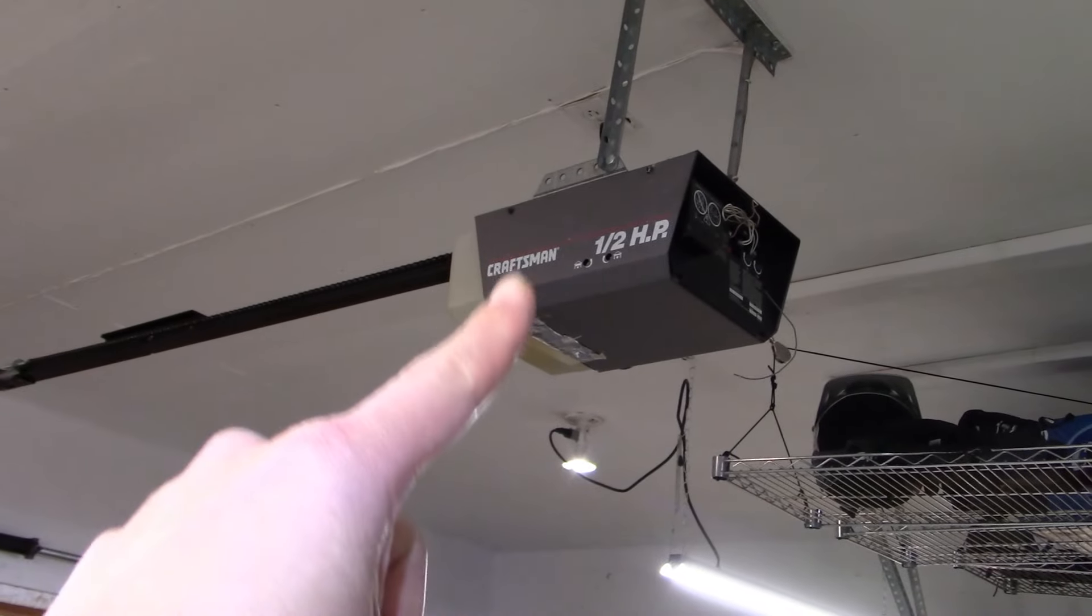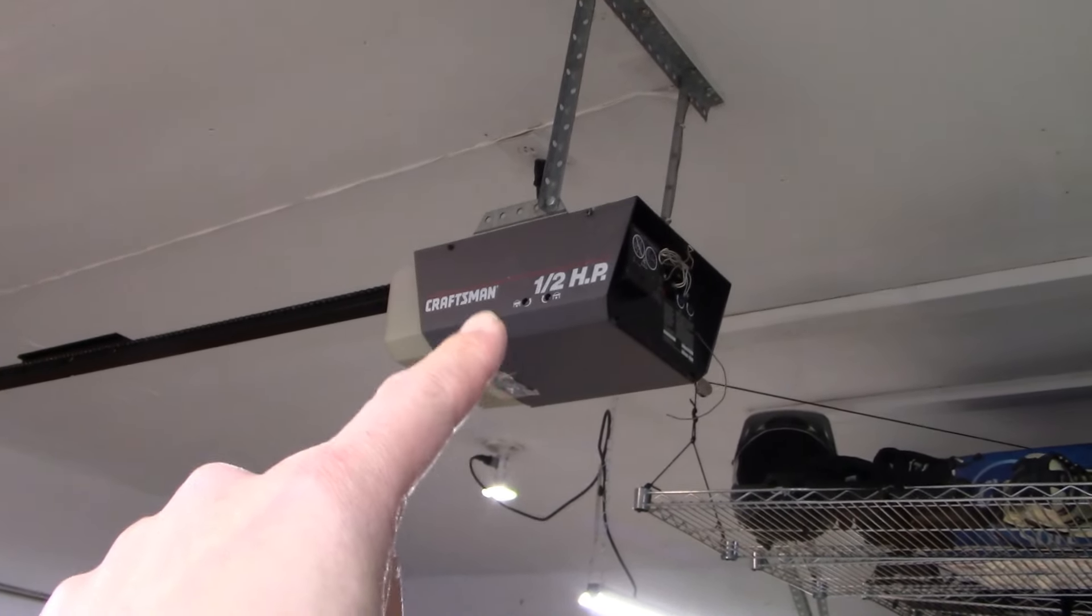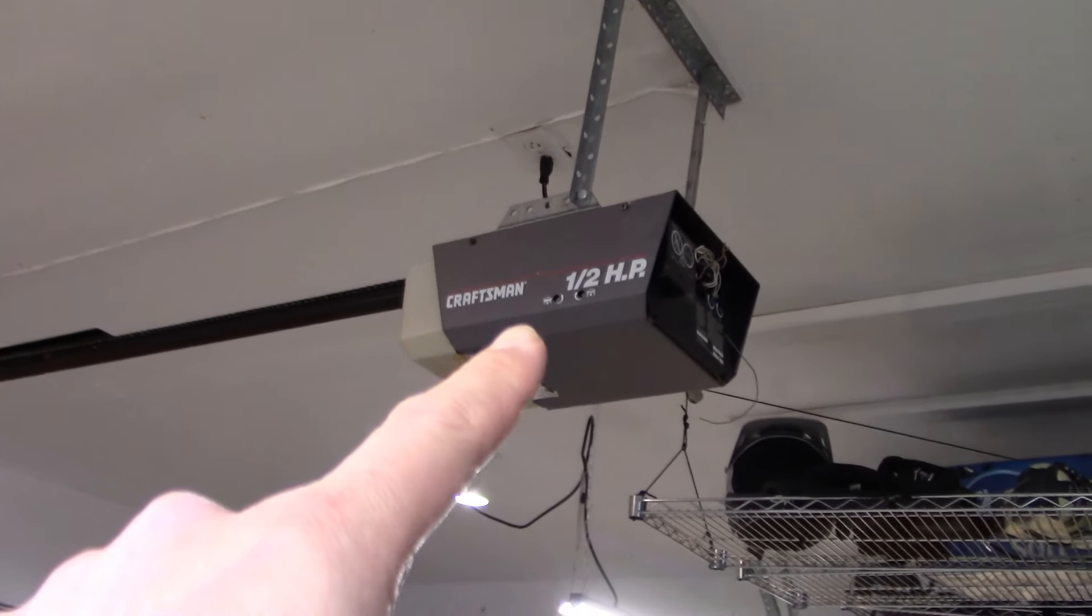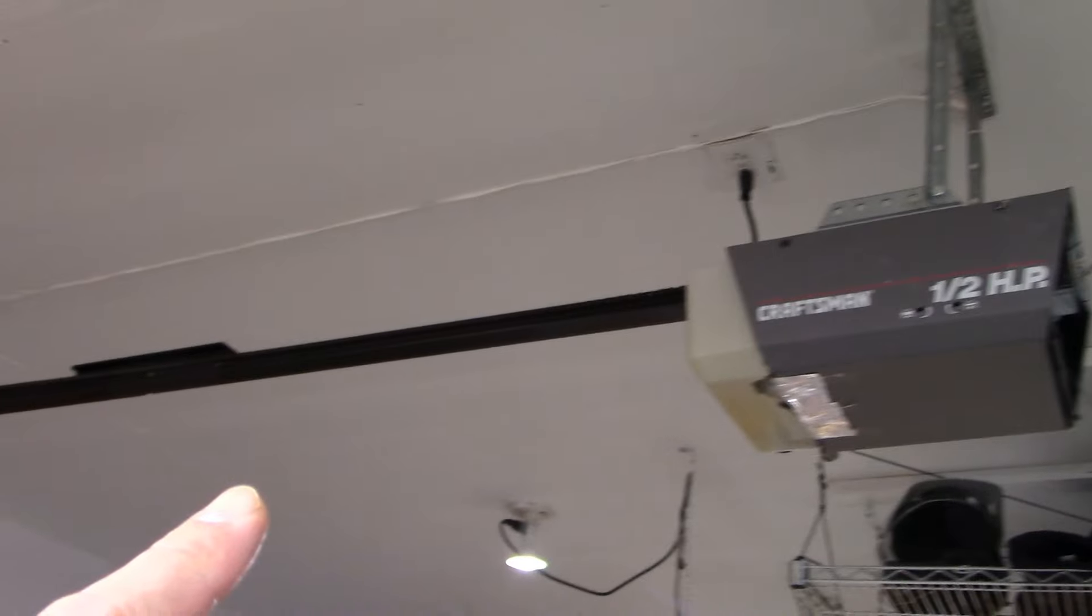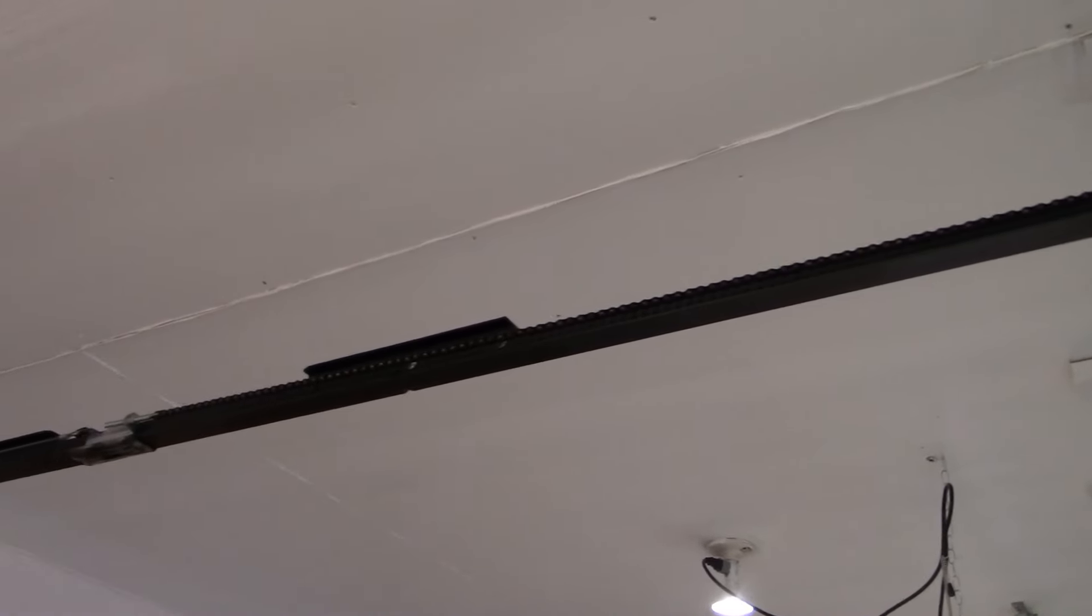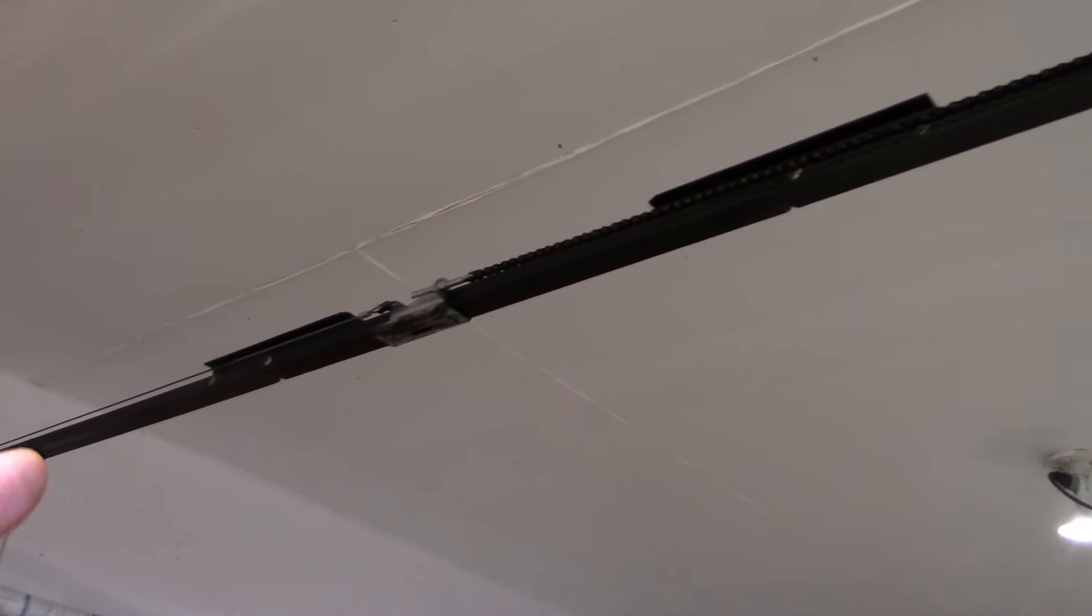Hello everyone and welcome to another video. So I'm having trouble with my garage door opener motor. I've got this older Craftsman half horsepower motor and when I push the button to try to open the garage door it basically just clicks and doesn't work.